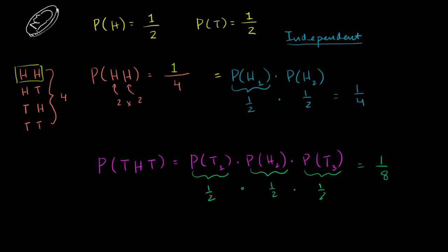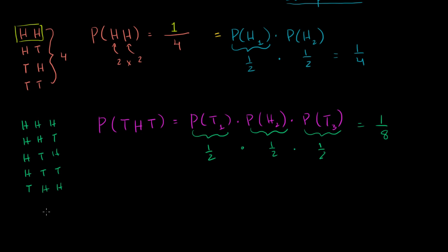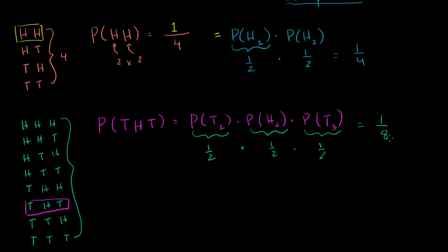We can verify this by listing all scenarios for three flips: HHH, HHT, HTT, THH, THT, TTH, TTT — and heads-heads-heads as well. That gives us exactly 8 equally likely possibilities. You want to make sure you're being exhaustive. The sequence tails-heads-tails is exactly one of those 8 possibilities, confirming a probability of 1/8.